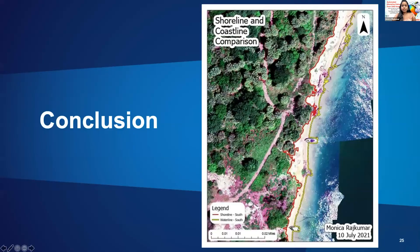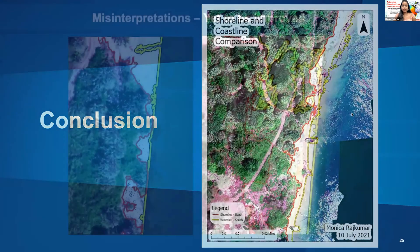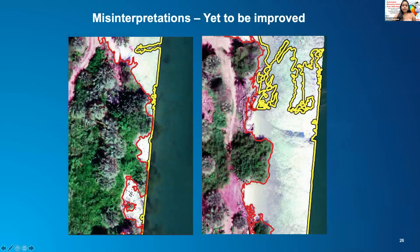The research performed a quick and cost-effective UAS-based shoreline extraction for the Jupiter Inlet Lighthouse ONA. Though the shoreline is captured perfectly, the waterline is not proper in a certain region, and this misinterpretation has to be improved in the future.